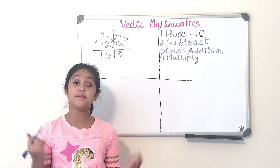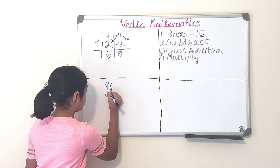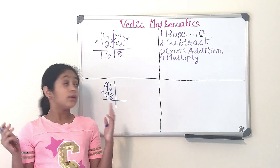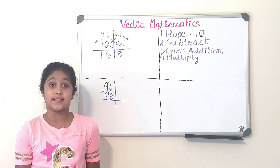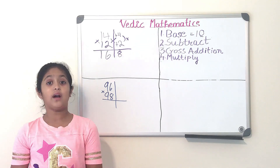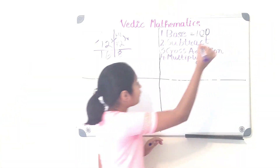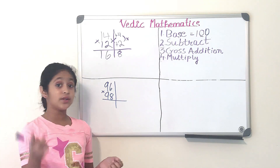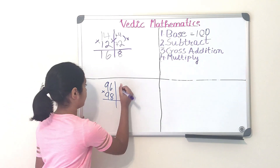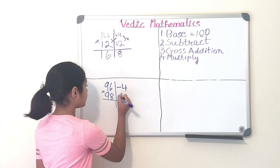Now let's try some bigger numbers — how about 96 times 98? We draw the T-chart and set everything up. Step one: decide the base. In this problem the base is 100, because 96 and 98 are closer to 100 than to 10 or 1000. Step two: subtract. We do 96 minus 100, which equals minus 4.